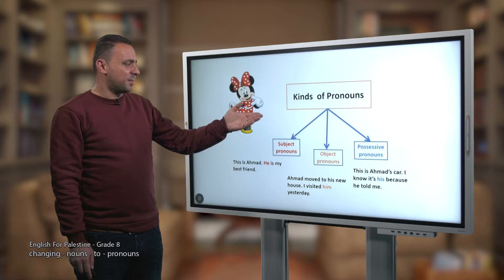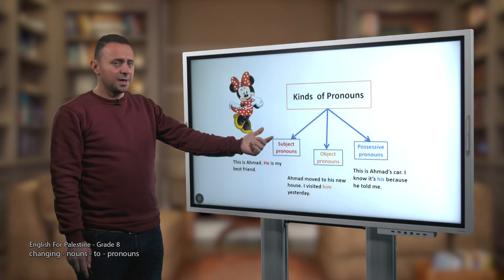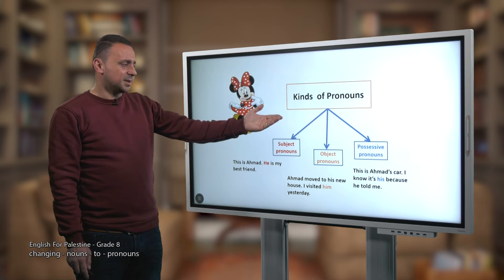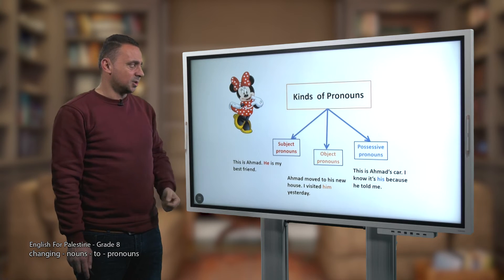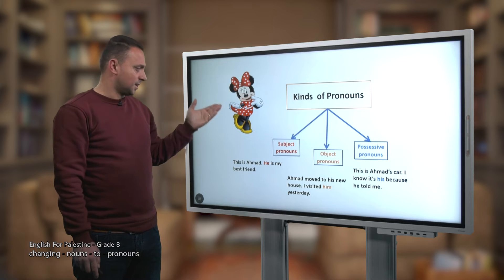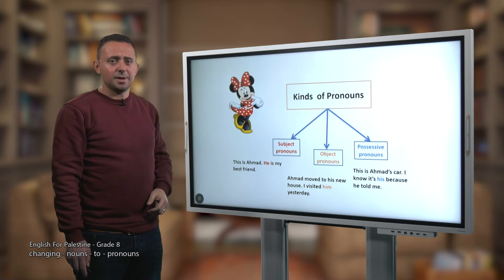The third type is the possessive pronouns. For example: 'This is Ahmed's car. I know it's his because he told me.' Notice the pronoun 'his' here is a possessive pronoun — it refers to Ahmed's car. So these are the three kinds of pronouns: subject, object, and possessive.